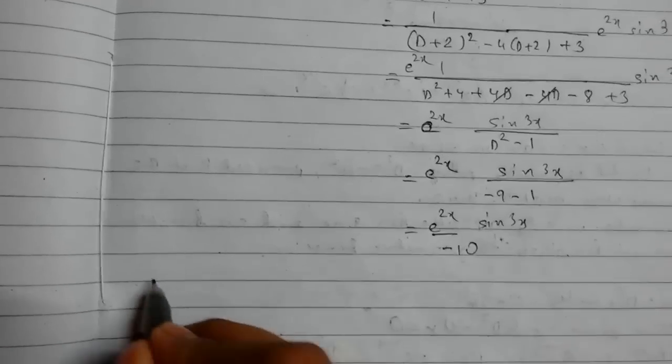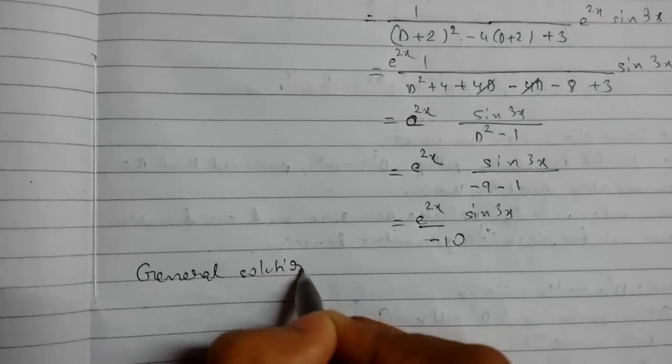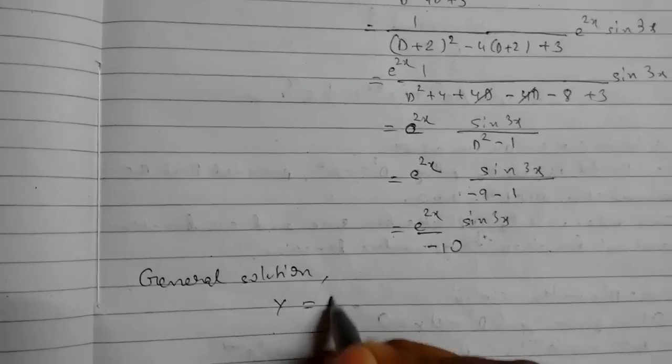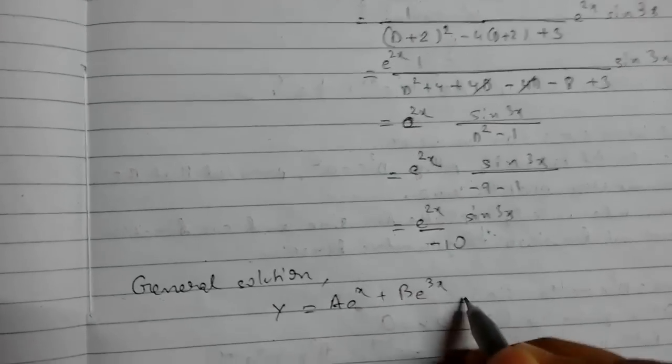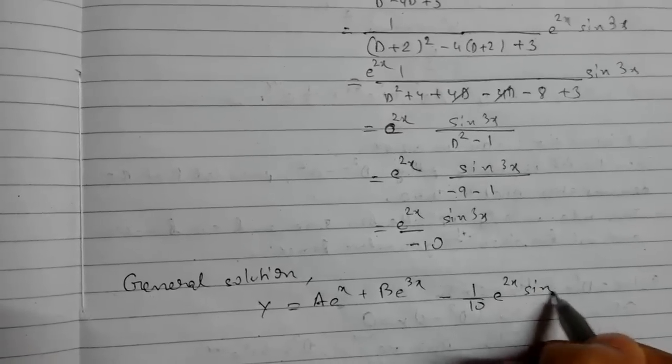So our general solution will be y = Ae^x + Be^(3x) - 1/10 · e^(2x) sin(3x). So this is our final answer.